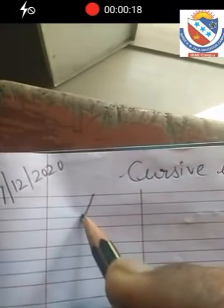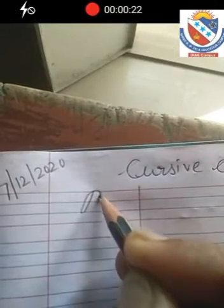Today we will learn how to write Cursive Capital B. First, we start from the top red line to second blue line, make a slanting line, then go to the top, make a curve line to the first blue line, then make another curve line.